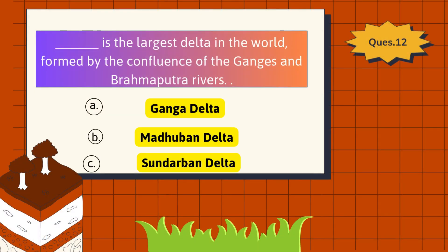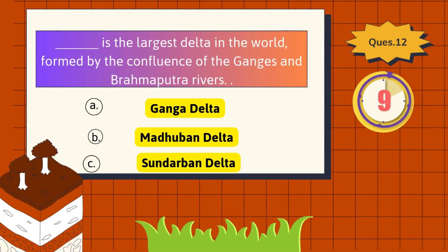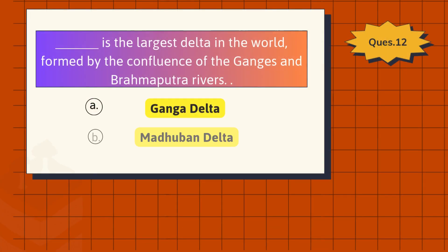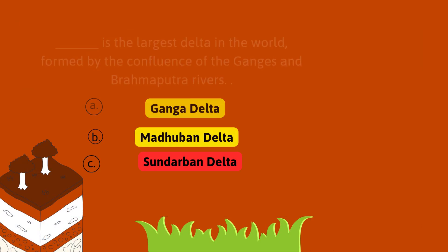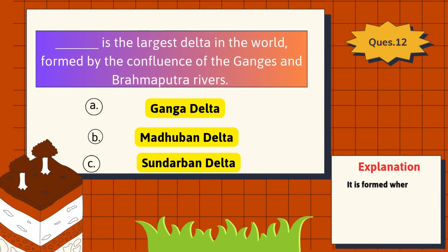Which is the largest delta in the world, formed by the confluence of the Ganges and Brahmaputra rivers? It is formed where the Ganges and Brahmaputra rivers meet and flow into the Bay of Bengal.